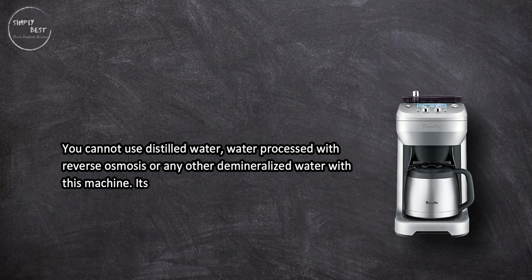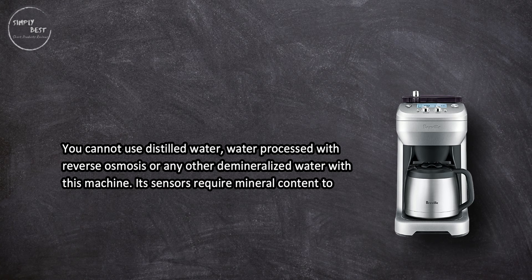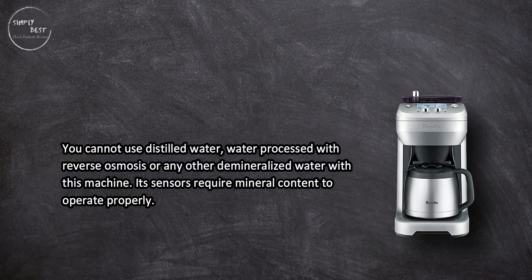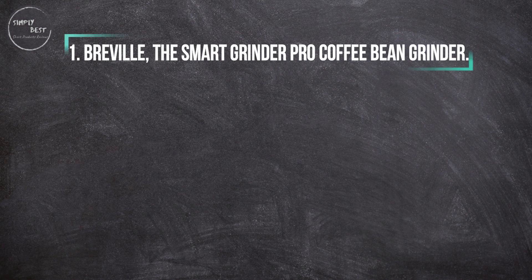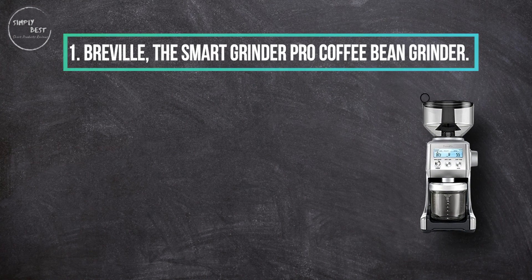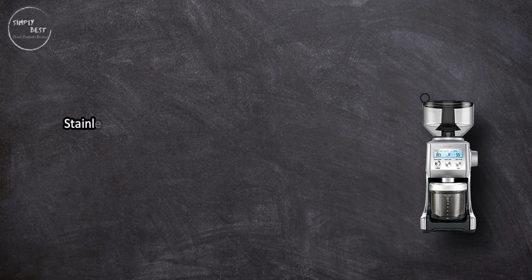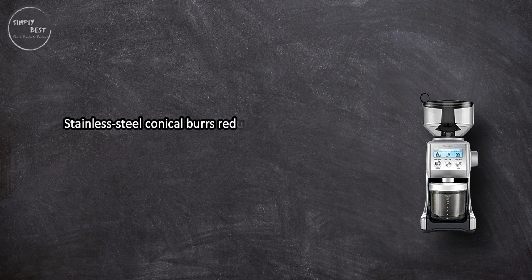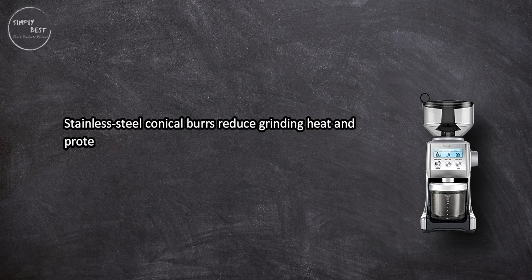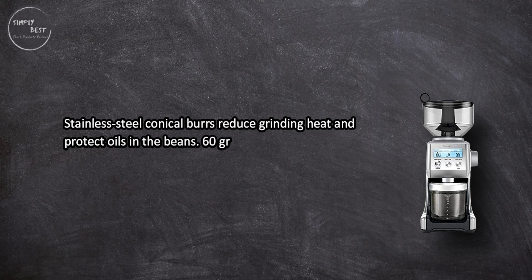At number one: Breville the Smart Grinder Pro Coffee Bean Grinder. Stainless steel conical burrs reduce grinding heat and protect oils in the beans. 60 grind settings. 165 watts. Electric timer lets you adjust grind time in increments of two seconds.